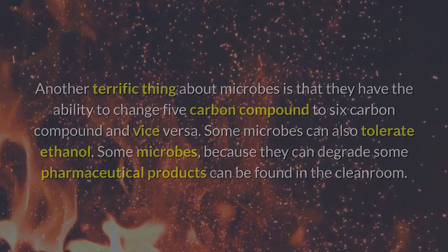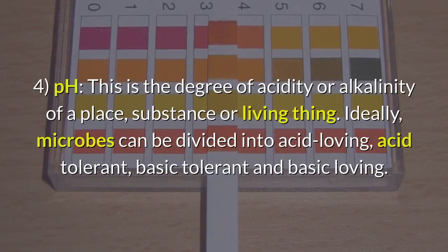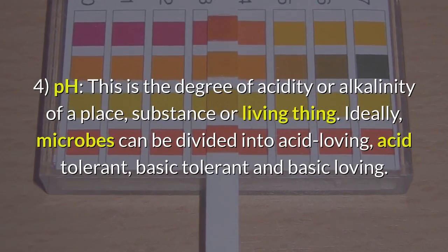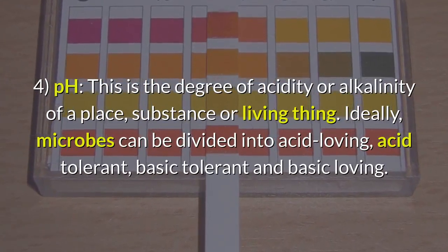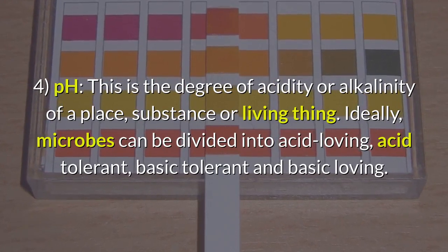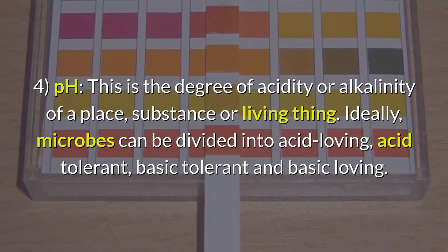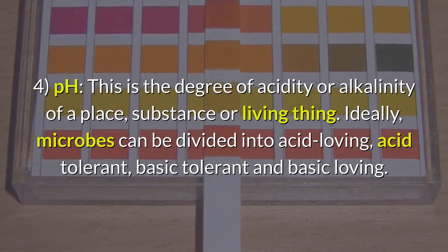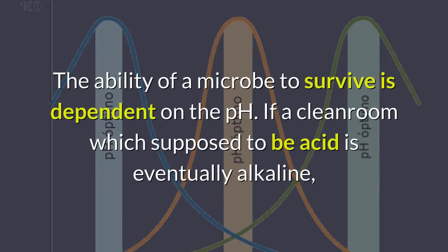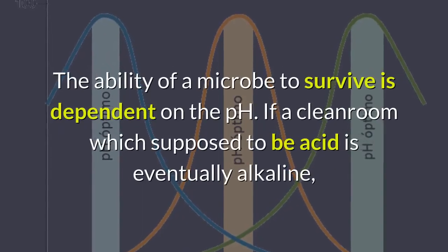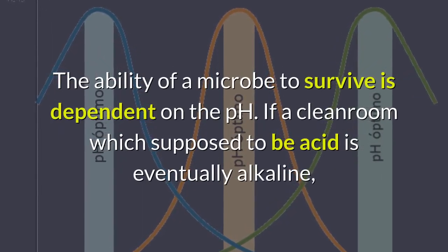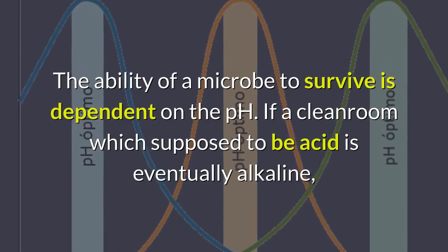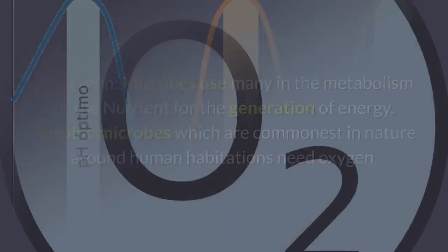Four: pH. This is the degree of acidity or alkalinity of a place, substance, or living thing. Ideally, microbes can be divided into acid-loving, acid-tolerant, basic-tolerant, and basic-loving. The ability of a microbe to survive is dependent on the pH. If a clean room which is supposed to be acidic is eventually alkaline, microbes suited to that pH will thrive.